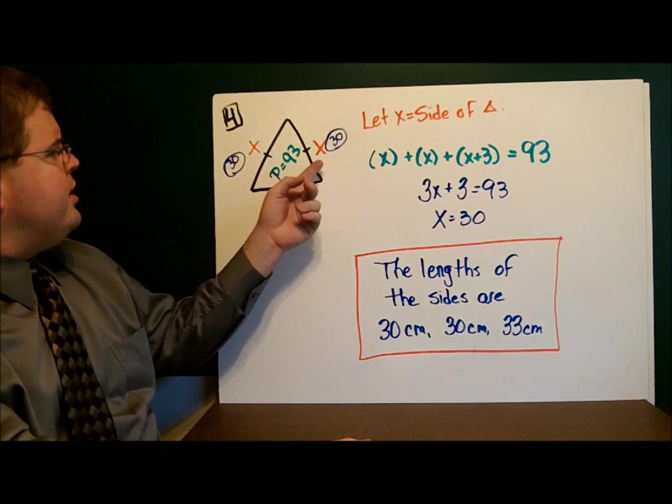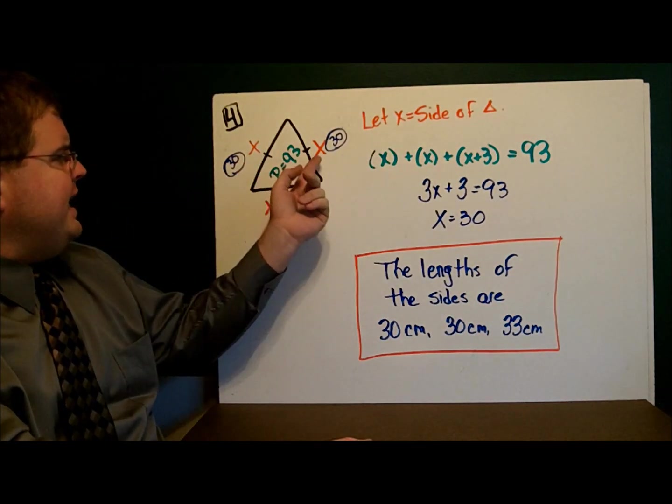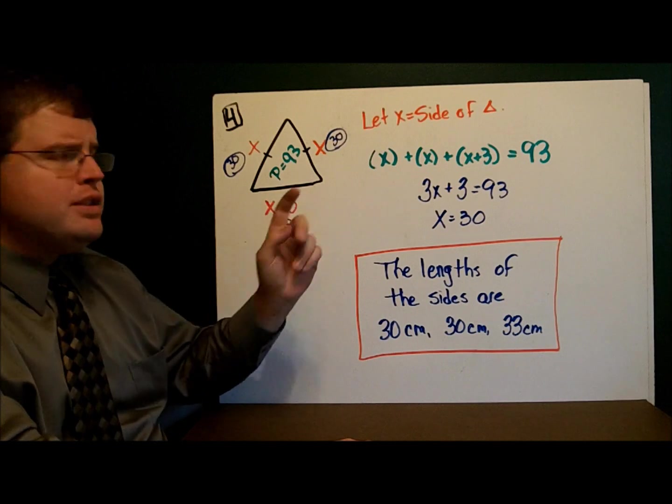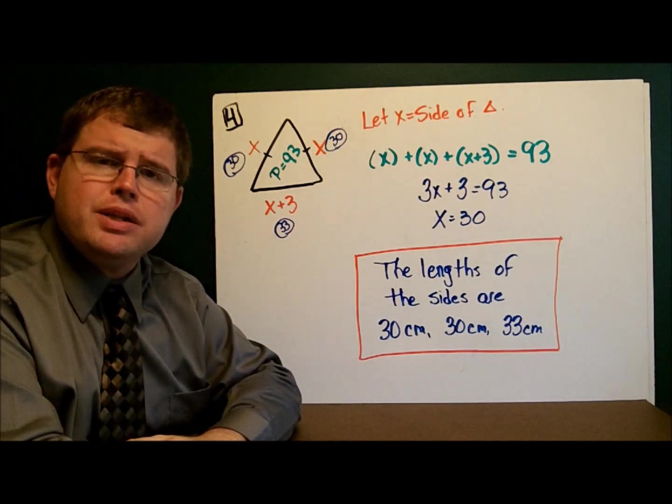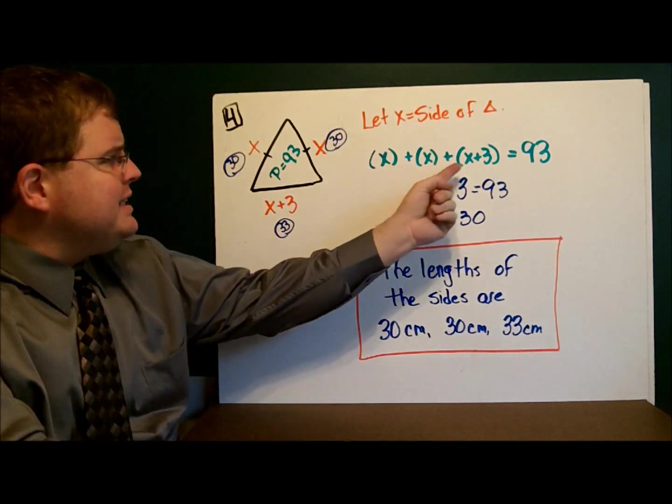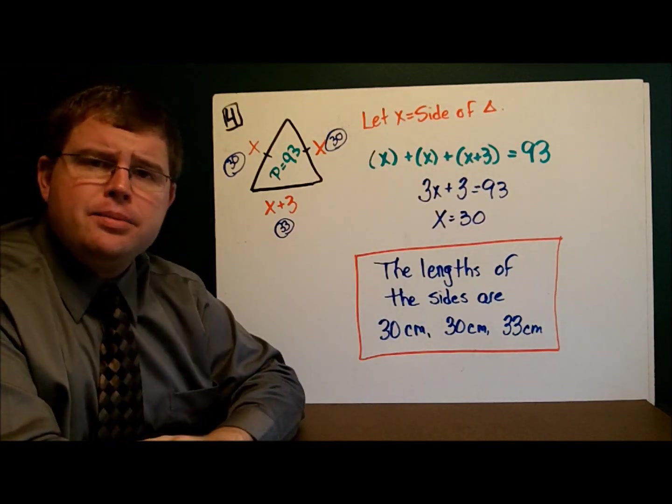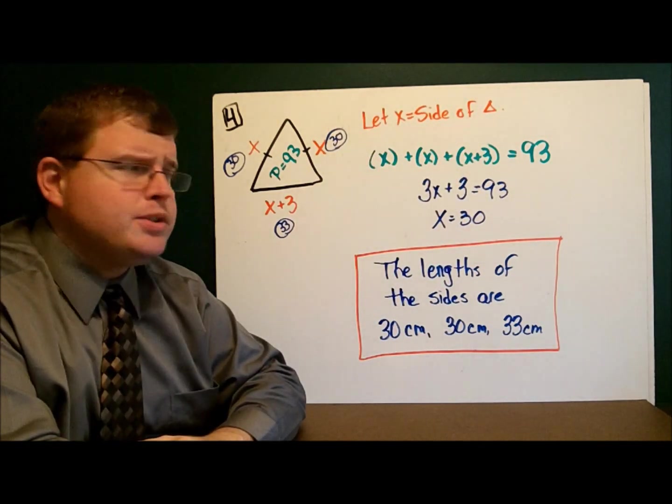So here are the two congruent sides, x and x. And the bottom is three more than one of those, x plus 3. Add those three sides together and it equals 93. And therefore x equals 30.